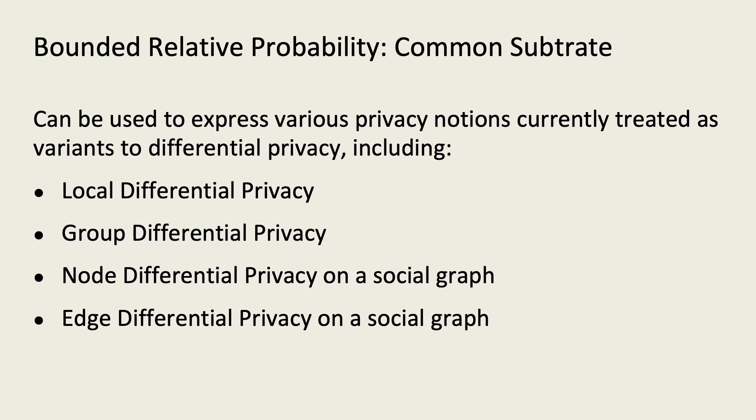We can use relative probabilities to make precise variations of differential privacy, such as local, group, node, or edge differential privacy. Doing so moves us from semantic debates about what counts as a data point to specifying which random variables' effects are bounded.